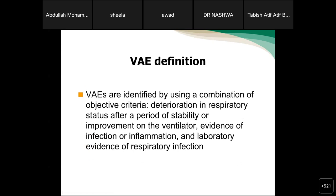The VAE definition: VAEs are identified using a combination of objective criteria. Number one is deterioration in respiratory status after a period of stability or improvement on the ventilator. Number two is evidence of infection or inflammation. Number three is laboratory evidence of respiratory infection. When all three are present, we label it as VAE. Deterioration alone is VAC; deterioration plus evidence of infection or inflammation is IVAC; all three including laboratory evidence is PVAP.